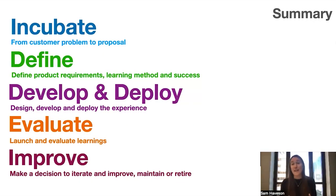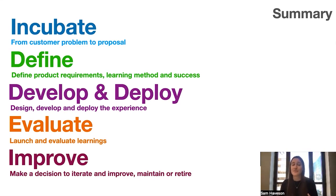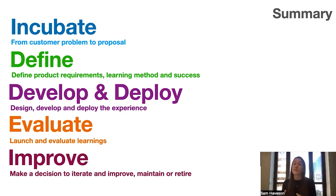To summarize the Flyway process used at Twitter: we start at incubation, going from the customer problem to a defined proposal. We define what those product requirements are, the learning methodologies we'll employ, and the success metrics that tell us we've made progress. Then we go to develop and deploy — designing, developing, and deploying the experience with quality in mind. Third, evaluation — having a clear launch plan and knowing how you're going to evaluate learnings. And lastly, improve — making decisions on how you will iterate and improve the experience, maintain it in a healthy state, or retire it.